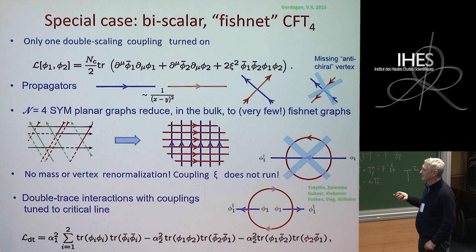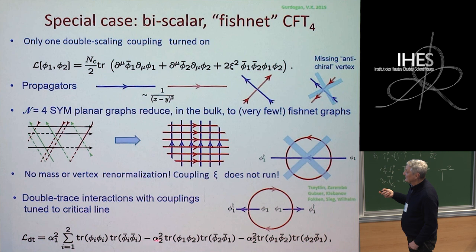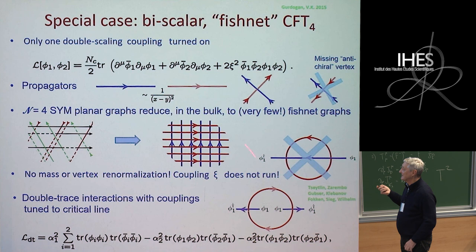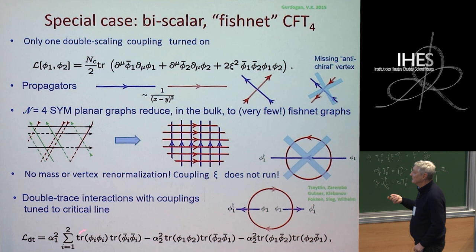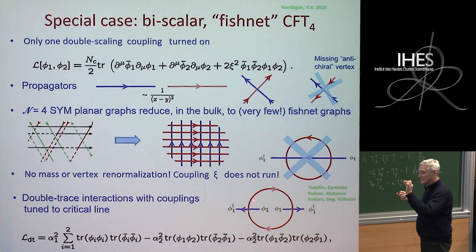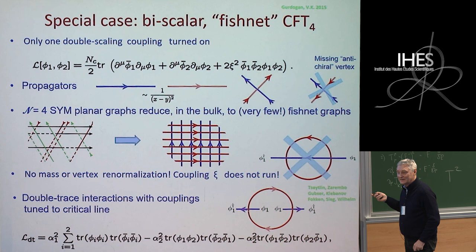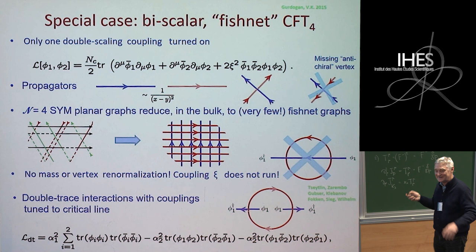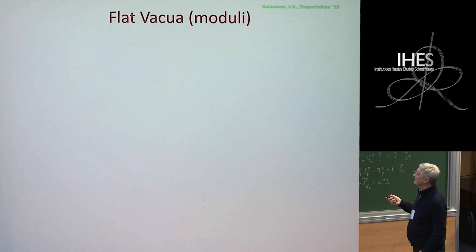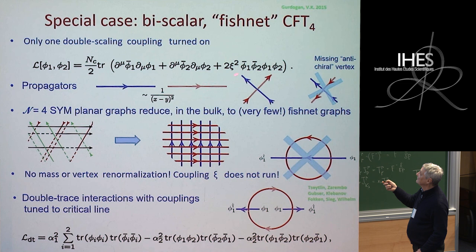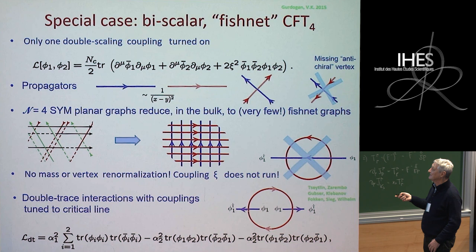A careful choice of these couplings leads to the critical point and the theory stays conformal. This is also true for the full gamma-deformed N=4 — you generate these double-trace terms but you can tune to the critical point where the theory stays conformal and integrable. Regarding infrared divergences: there are ultraviolet divergences, but they are regularized, and everything looks nice at the end. All the alphas depend on ξ — they are critical lines, not just critical couplings.